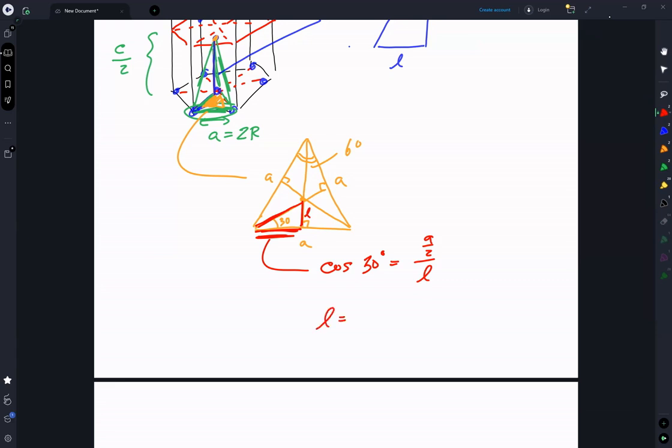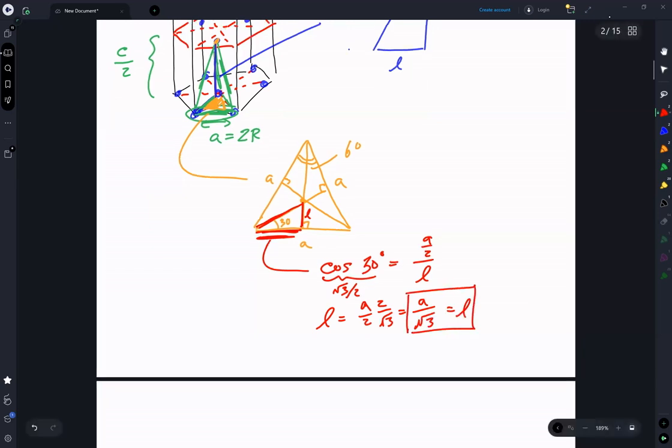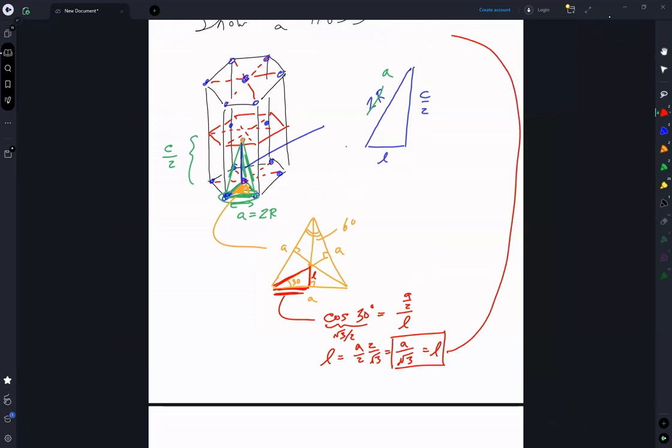So L is equal to A over 2, using square root of 3 over 2 for cosine 30. We get 2 over square root of 3. L is equal to A over square root of 3. So that is the value we need here. So that is A over square root of 3.